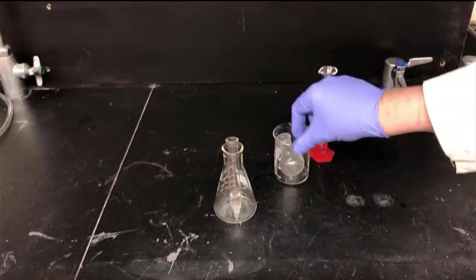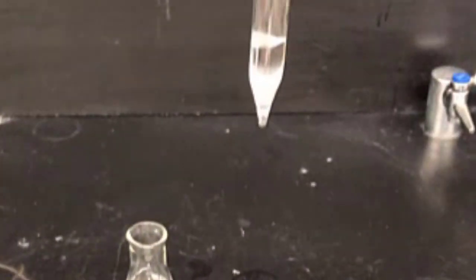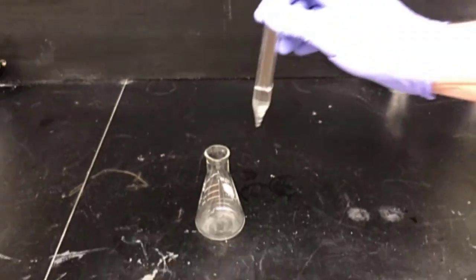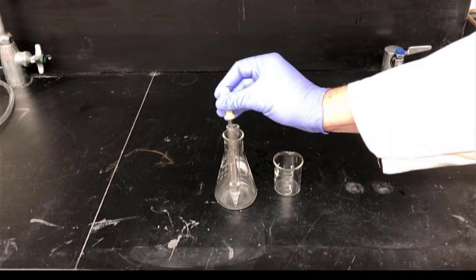The test tube will have two phases now. There's a lower aqueous layer which contains the peroxide and hydroxide, and then there's an upper layer that contains ether and the dissolved organic materials, including the products. Remove the lower aqueous layer and discard it.